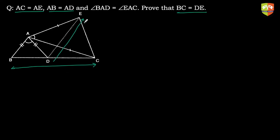As we've been discussing, whenever two parts of a triangle need to be proven equal, one of the best ways is to prove they are corresponding parts of congruent triangles. We just need to identify the two triangles properly and establish the congruence between them — then the desired result follows automatically.